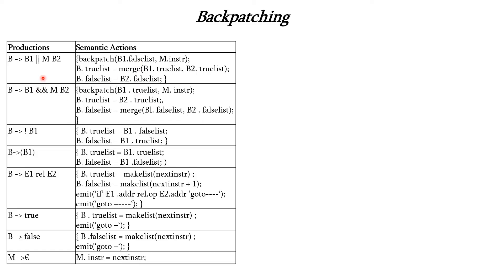For the OR operation, the left-hand side B becomes true when either B1 is true or B2 is true. So both B1 and B2 will be in the true list of B. If B1 is true, B becomes true; if B1 is false, it checks B2, and if B2 is true, B also becomes true. For the false list, we have only B2's false list, because if B1 is false and B2 is also false, then B is definitely false — so it purely relies on B2.